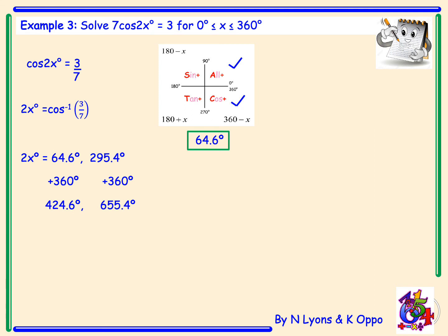We now have four values: 2x equals 64.6, 295.4, 424.6, and 655.4 degrees. Since we need to solve for x, not 2x, we divide each angle by 2. This gives a final solution of x equals 32.3 degrees, 147.7 degrees, 212.3 degrees, and 327.7 degrees.